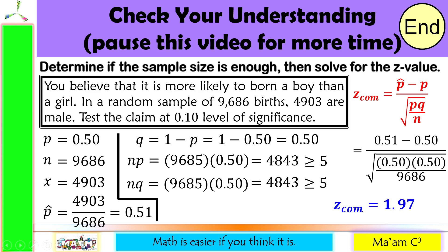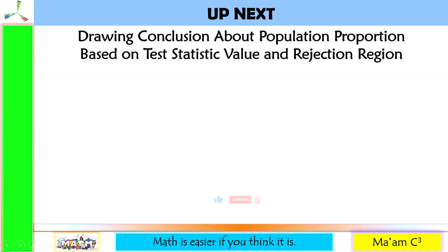Gets? Our next lesson is drawing conclusion about population proportion based on test statistic value and rejection region.